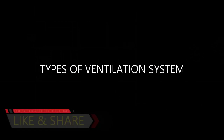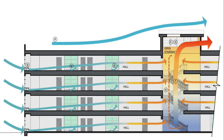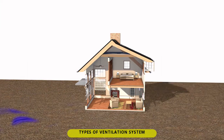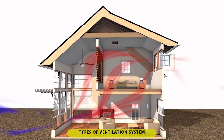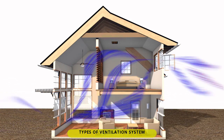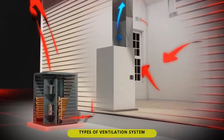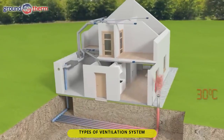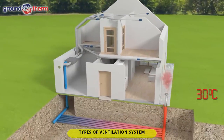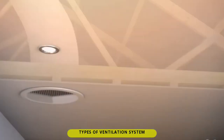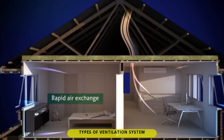Types of ventilation system. 1. Natural: uses windows, screens, air wells and other building openings to allow the normal circulation of air flow in an indoor space. 2. Mechanical: uses electric machines and air ducts to provide and channel air circulation in an indoor space. 3. Hybrid: uses both natural and mechanical type of ventilation.